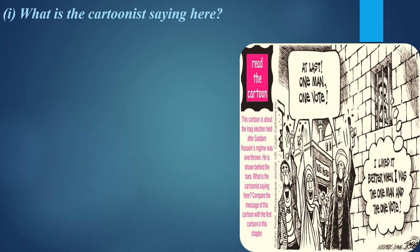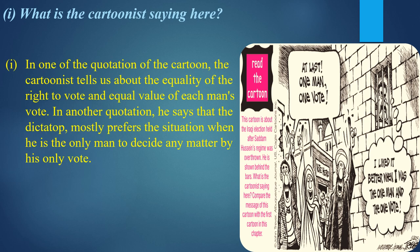The next cartoon is about the two Iraqi elections held after Saddam Hussein's regime was overthrown — he is shown behind bars. Question: What is the cartoonist saying? The cartoon shows how a dictator perceives voting versus what 'one person, one vote' means in a true democracy.